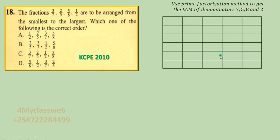To find the LCM we shall require a table. On this table we put 7 in the first box, 5 in the second, 8 in the third, and 2 in the fourth, leaving the leftmost column empty for the prime factors. In prime factorization, we look for a prime number capable of dividing any of these numbers. Remember, a prime number has only two divisors: 1 and itself.